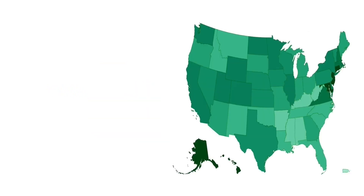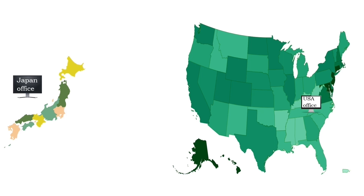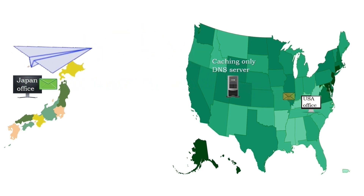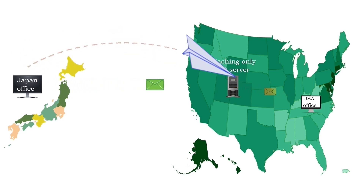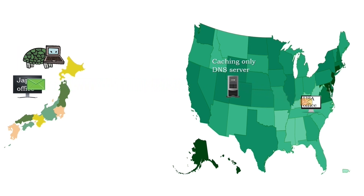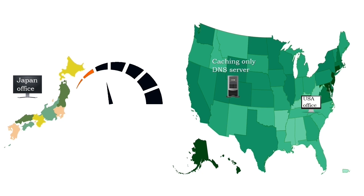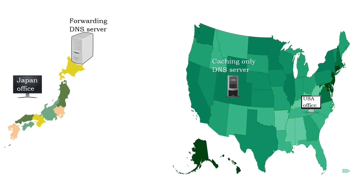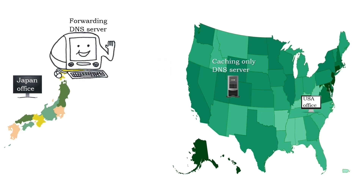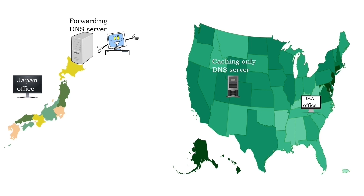For example, a company has its main office in the USA and a branch office in Japan. The company uses a caching-only DNS server in its main office, and computers of both offices are configured to use it for name resolution. Because of the physical distance, computers in Japan take more time to retrieve information and work slower. To improve their speed, the company can use a forwarding DNS server at the Japan office. Since a forwarding DNS server only saves answers it receives and does not actively communicate with DNS servers, it needs minimal hardware resources. The company can use any spare or unused system for it.